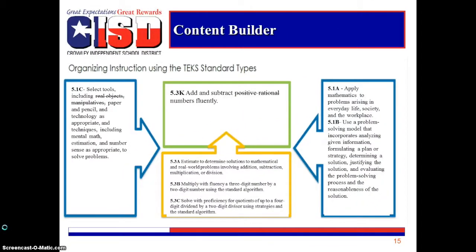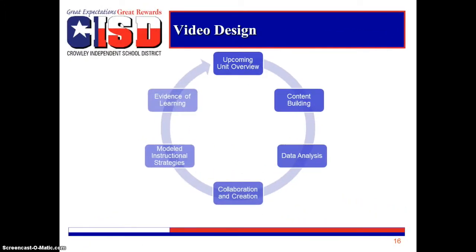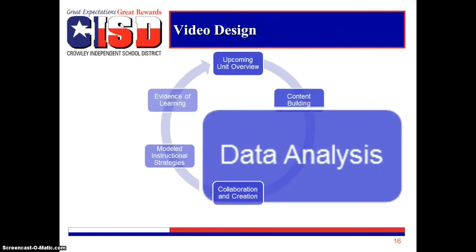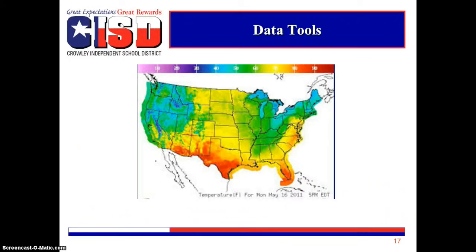This is a completed fifth grade math Content Builder. The third component is data analysis. When looking at a weather map shaded by colors of the spectrum from red to violet, hot spots could be easily identified. The places that have higher temperatures are usually red or orange on a map.